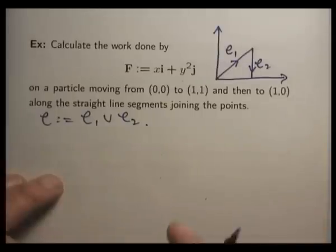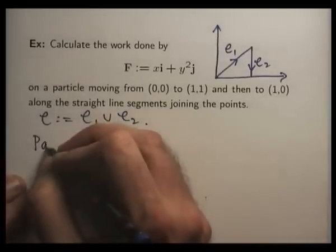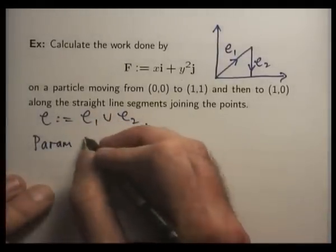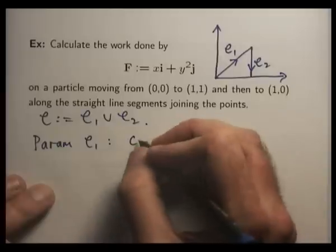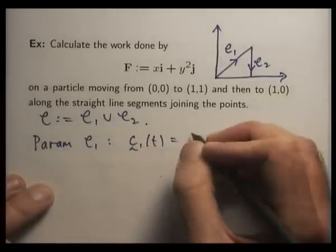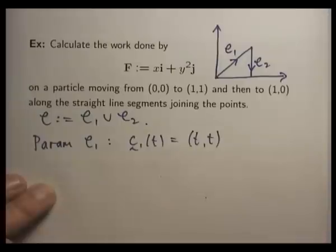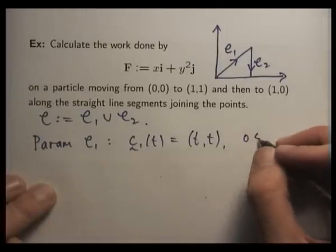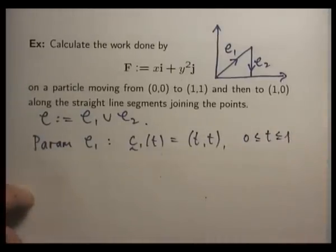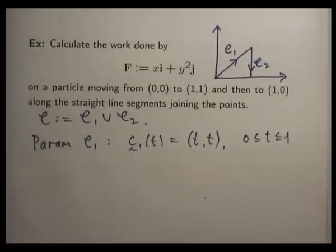So to parametrize C1, it's just (t,t). Again, you can use that little algorithm that I showed you before.